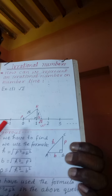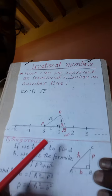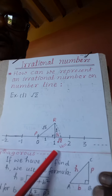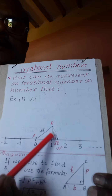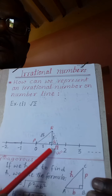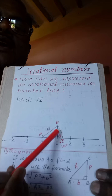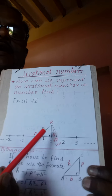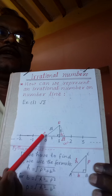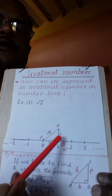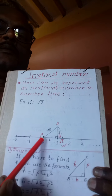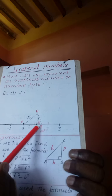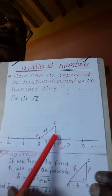Step 2: We draw a perpendicular line of 1 unit at point 1. This is a perpendicular line of 1 unit. You can see on the screen. We mark all three points P, Q, and R. We get a right-angled triangle PQR. Here, PQ is equal to 1 unit and QR is also equal to 1 unit.